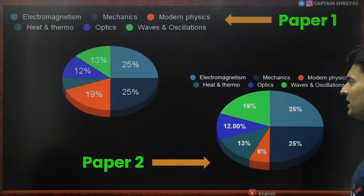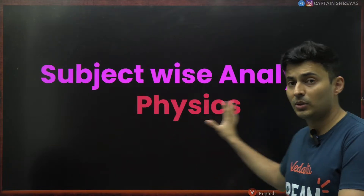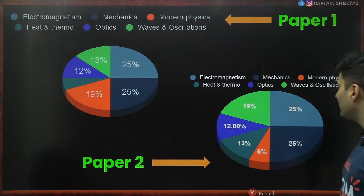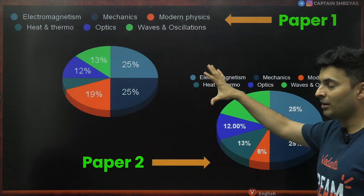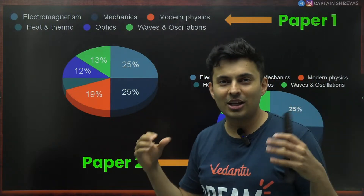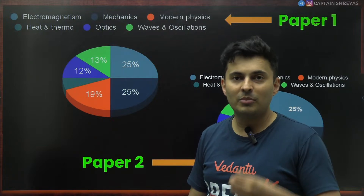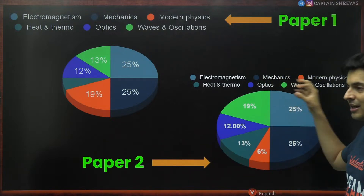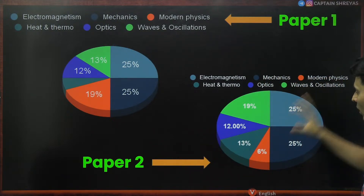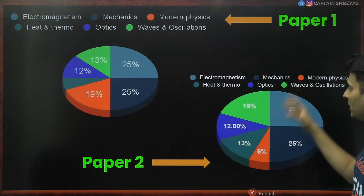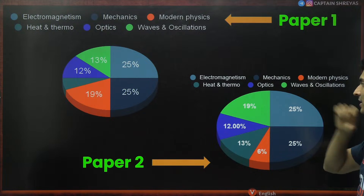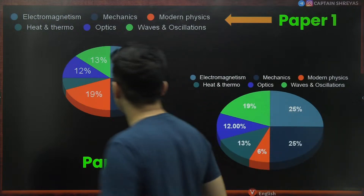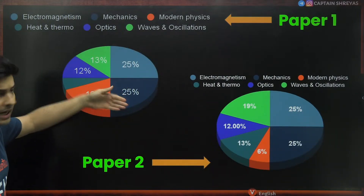Let's do subject-wise analysis. In Physics, the major chunk — 25% each — came from electromagnetism and mechanics, so those topics must be solved properly. Since the 1990s, electromagnetism and mechanics have been the favorite picks of the IITs. Modern physics was barely 6%, heat and thermodynamics around 13%, optics 12%, and waves and oscillations around 19% — this is for Paper 2.